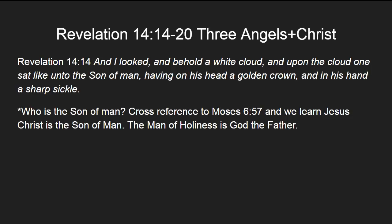After this angel proclaims his message, we have a description of three angels and Christ, found in Revelation 14, verses 14 through 20. In Revelation 14:14: 'I looked and behold a white cloud, and upon the cloud one sat like unto the Son of Man, having on his head a golden crown, and in his hand a sharp sickle.' Cross-referencing to Moses 6:57, we learn that Jesus Christ is the Son of Man — the Son of the Man of Holiness, referring to God the Father.